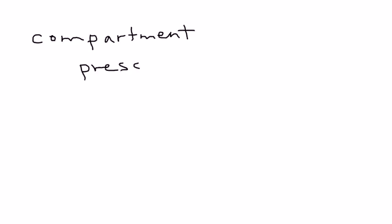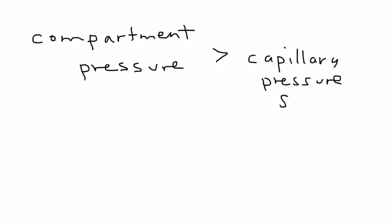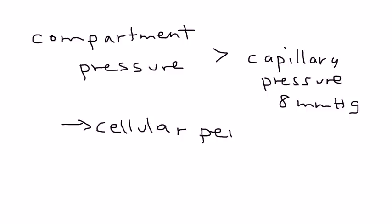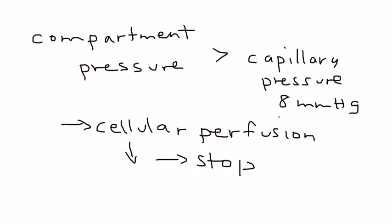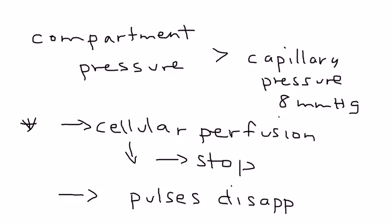To summarize this critical point: once the compartment pressure, which is normally zero, rises and becomes greater than the capillary pressure — normally at eight — cellular perfusion is compromised. First it decreases, then eventually it can stop altogether. Importantly, this happens before the pulse disappears. Even if pulses are normal, cellular perfusion can already be decreased or stopped, because it takes time for pulses to disappear.